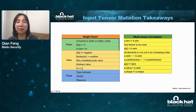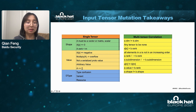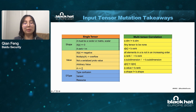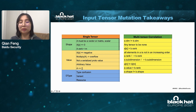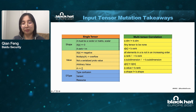We have discussed many input tensor mutation preferences. We list all those preferences in two tables. We can prioritize tensors during the scheduling process — for example, prioritize a single tensor if its dimension has zero, or if its value has negative ones. For multiple tensor correlations, we can prioritize tensors with the same dimension, or schedule tensors with different dimensions, or prioritize tensors with empty tensors first.